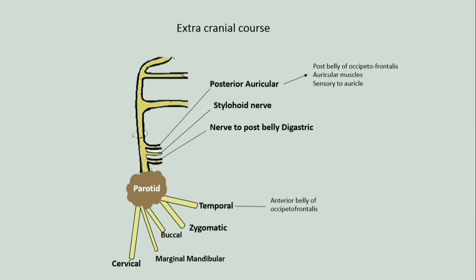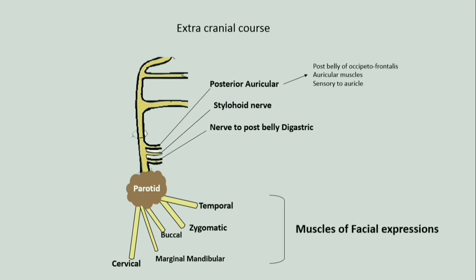The temporal nerve supplies the anterior belly of the occipitofrontalis. The buccal nerve supplies the buccinator. All terminal branches except the cervical branch supply the muscles of facial expression. The cervical branch supplies the platysma.